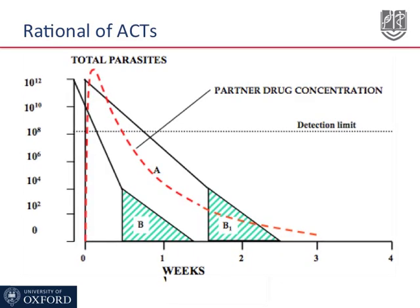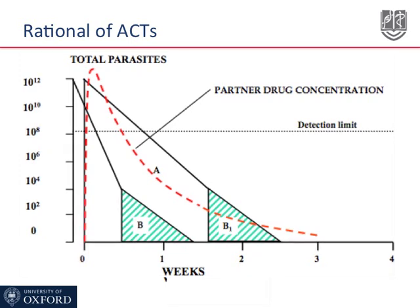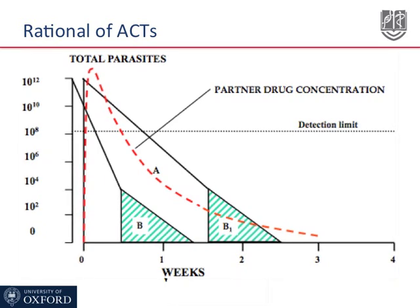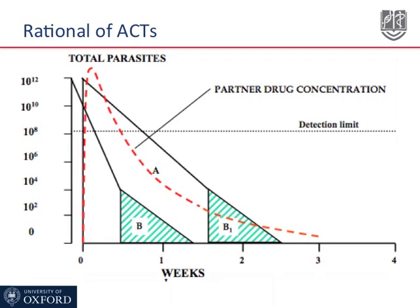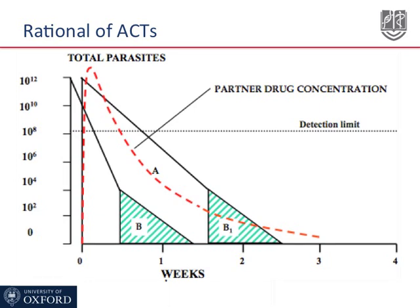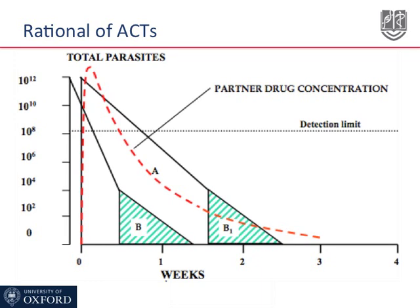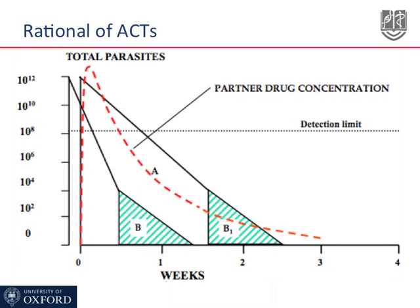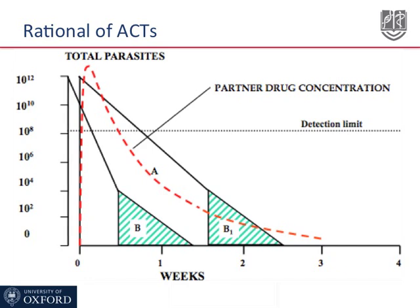Using all the information above, this slide summarizes the rationale for artemisinin combination therapy. The elimination profile of the partner drug is shown in the red dotted line. If we use an artemisinin derivative with a high parasite reduction ratio, the total parasite biomass declines quickly below the detection limit, and around one week the residual parasite biomass is exposed to a much lower concentration of the partner drug, making it more likely that some of those parasites will survive and re-emerge into a recrudescent infection a few weeks later.